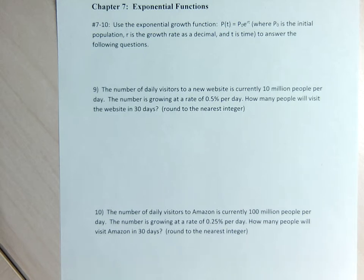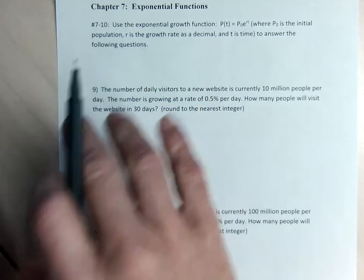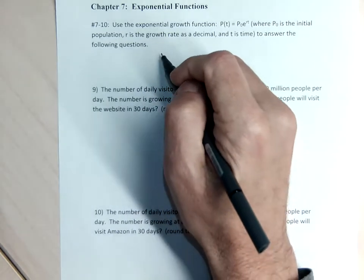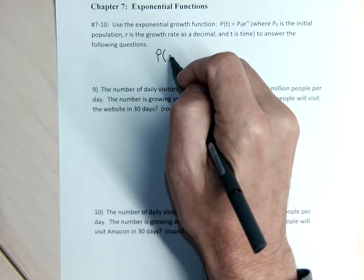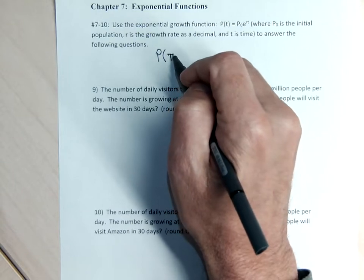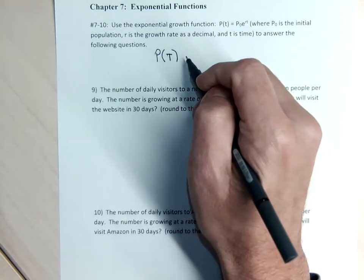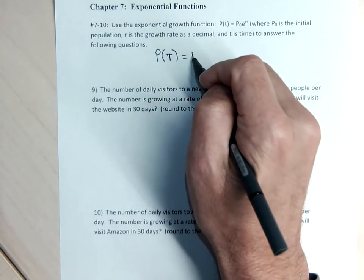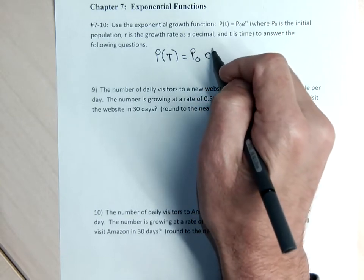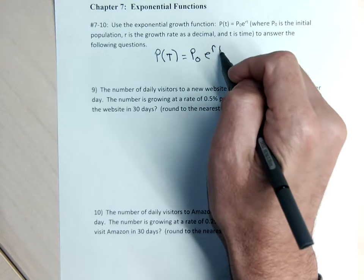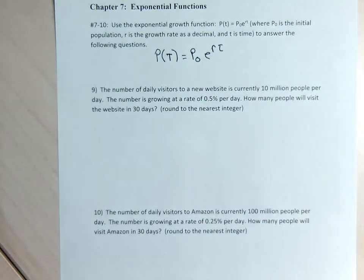This is just a continuation of the exponential growth problems that we were working on. Problems 9 and 10 are on the screen. We're going to use the formula P of T — P being the future amount after T units of time — equals the starting number times E to the R, which is the growth rate as a decimal, times T, where T is the time.